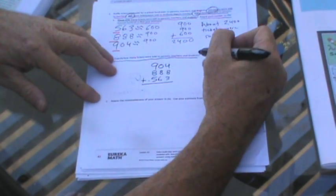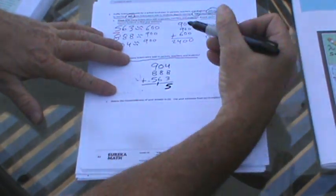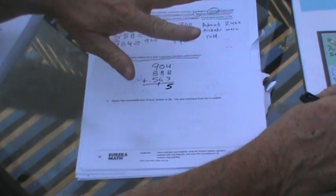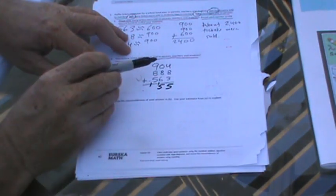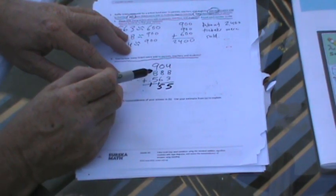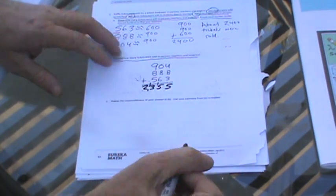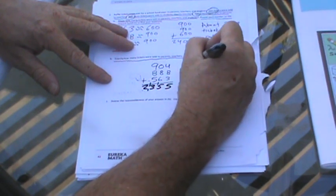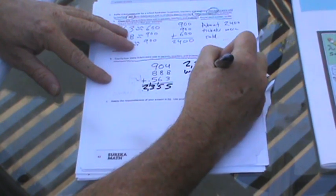8 ones plus 4 ones is 12, plus 3 ones is 15. Put the 5 there and carry the 1. 8 tens plus 8 tens plus 6 tens is 22 tens, plus the 1 is 23 tens, so that's 15. For hundreds, 9 plus 1 is 10, plus 8 is 18, plus 5 is 23 hundreds. So 2,355 tickets were sold.